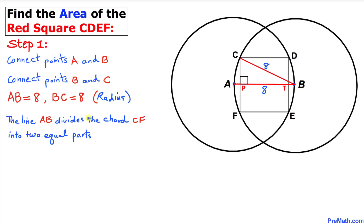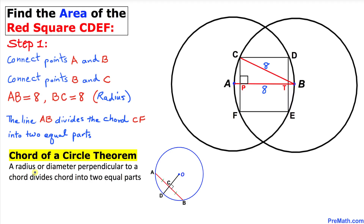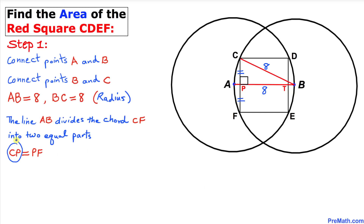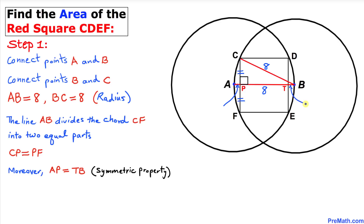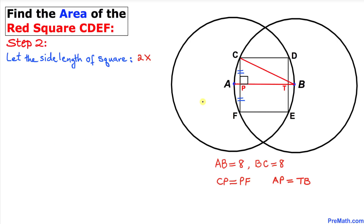Let's observe that line segment AB divides chord CF into two equal parts, according to the chord of a circle theorem. This theorem states that a radius or diameter perpendicular to a chord divides the chord into two equal parts. Therefore chord CF is divided equally, giving us CP = PF. Moreover, line segments AP and TB are equal because of the symmetric property.